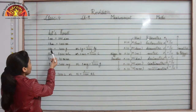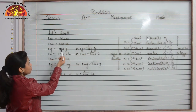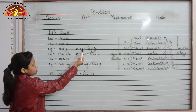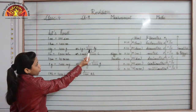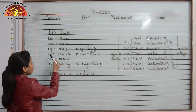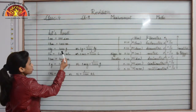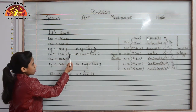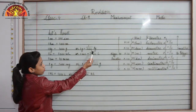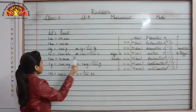1 kg is equal to 1000 gram, or 1 gram is equal to 1 upon 1000 kilogram. 1 liter is equal to 1000 milliliter, or 1 milliliter is equal to 1 upon 1000 liter.